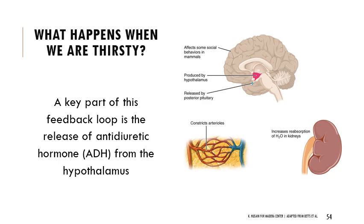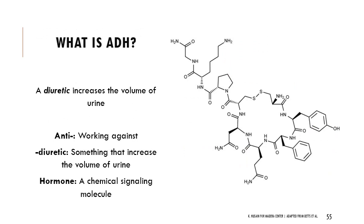The RAS system also involves the release of antidiuretic hormone (ADH) from the hypothalamus. A lot is happening in the hypothalamus — blood is being changed, arterioles are constricting so less filtration occurs, and when material is filtered through, reabsorption of water in the kidneys increases. Diuretics are things that increase urine volume, making you urinate more — like caffeine, alcohol, or certain medications. Antidiuretics decrease urine volume. Antidiuretic hormone is a chemical signaling molecule that works against diuretics.